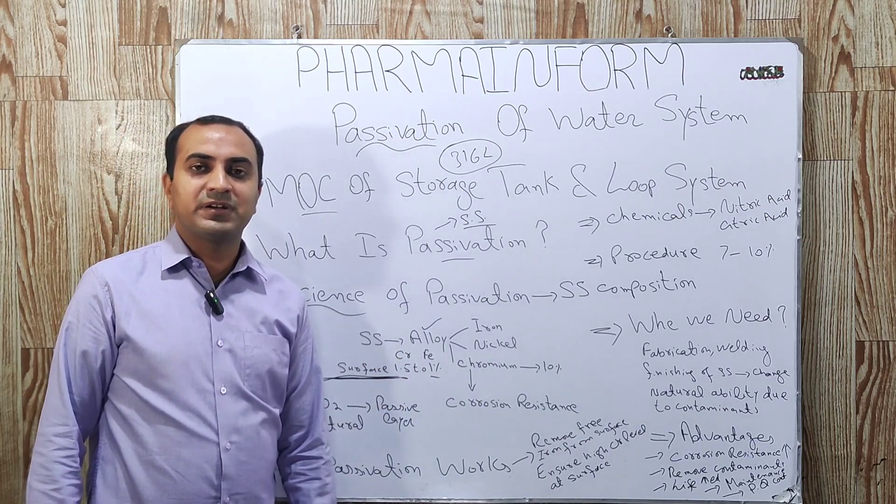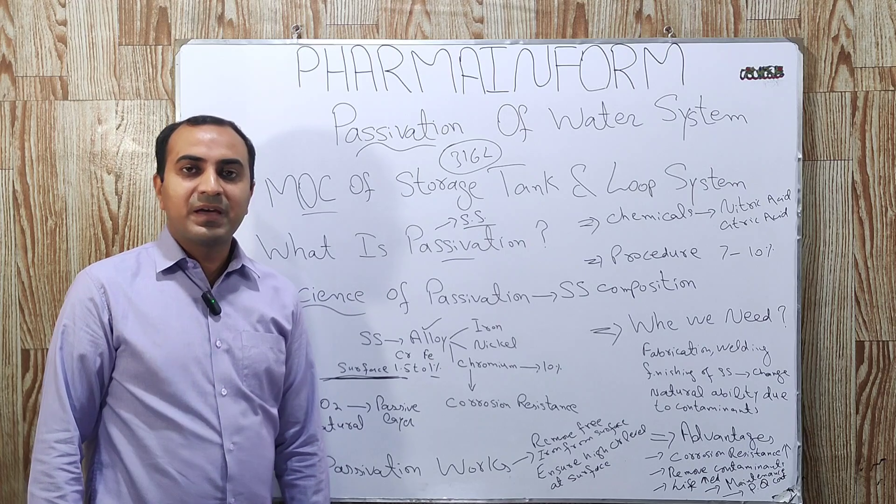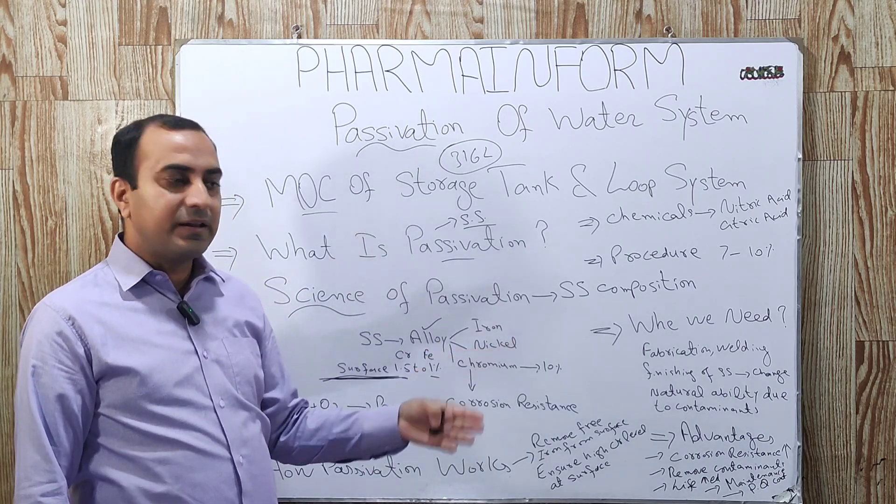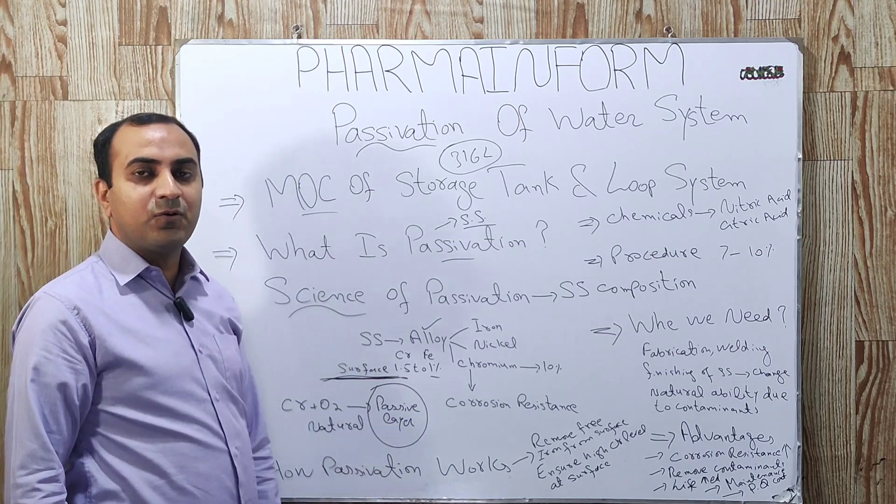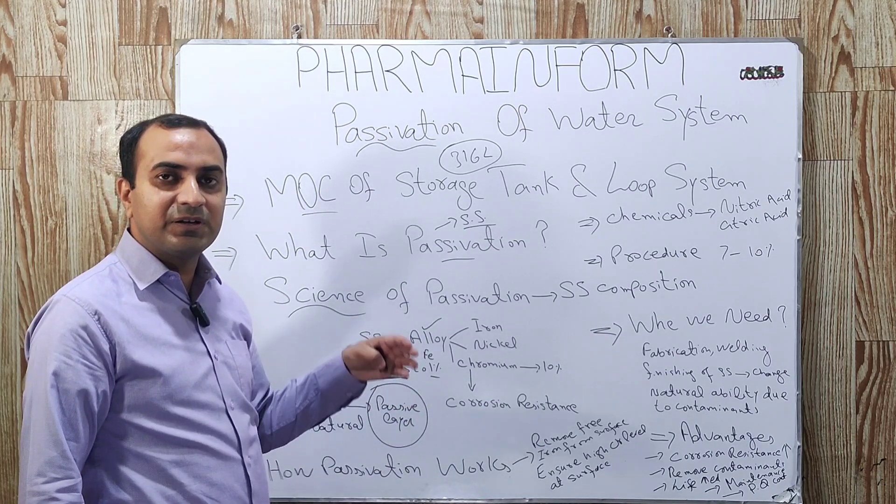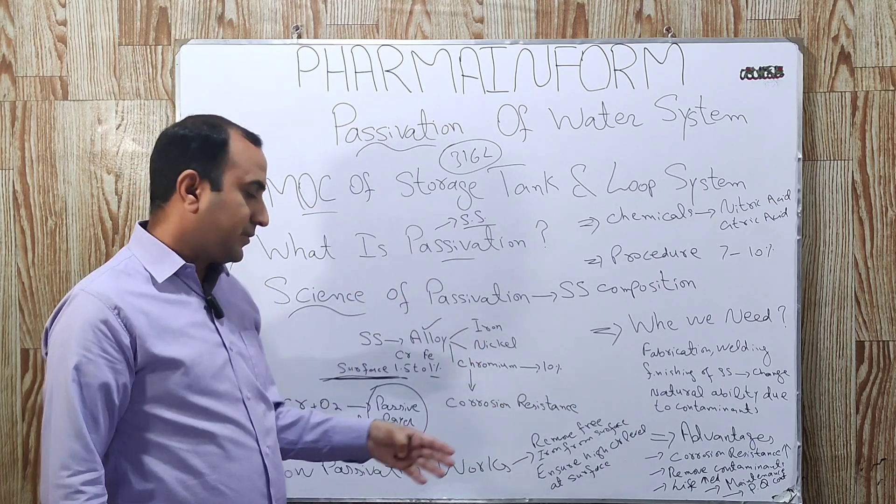The chromium available on the surface reacts with the oxygen and form an inert layer which is known as passive layer. This passive layer or passive film is basically known as natural passivation.